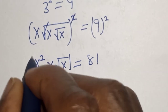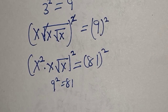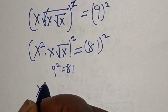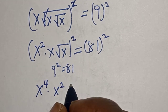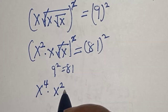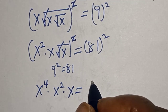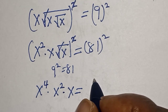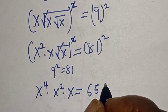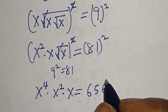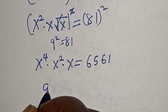Now let's square both sides again. Then here we get x to the power of 4, multiplied by x squared — this one will cancel — multiplied by x, is equal to 81 squared. 81 squared is 6561.